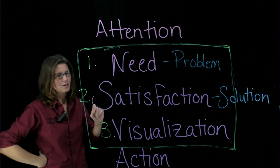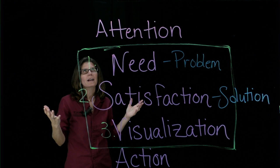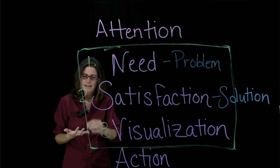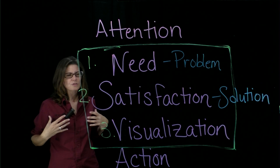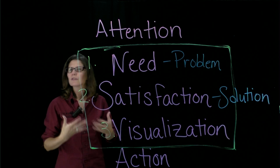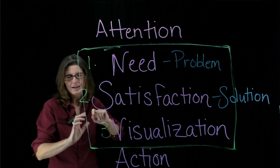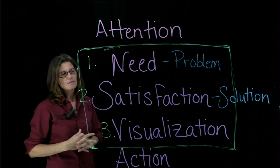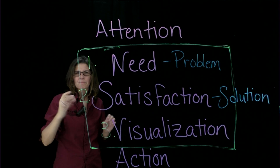The third main point in Monroe's Motivated Sequence is the visualization step, and a lot of people get confused by this. All it is, is where you're imagining the solution as reality. There are three different ways to do the visualization step: the positive method, the contrast method, and the negative method. The important thing with the visualization step, no matter which method you use, is you always start with a word that prompts people to visualize — such as 'imagine,' 'visualize,' or 'picture this.' You're making the audience create an image in their brain where they see the solution as reality.